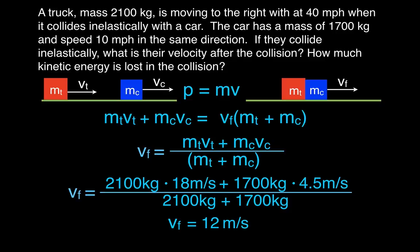The final velocity, which we should know ahead of time would be to the right, is 12 meters per second to the right. That is how you solve for the final velocity of an inelastic collision — pretty straightforward.